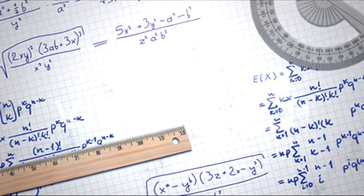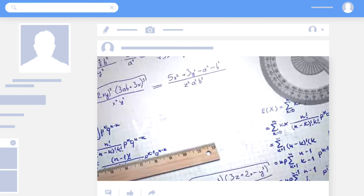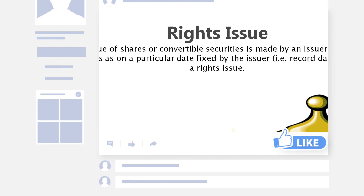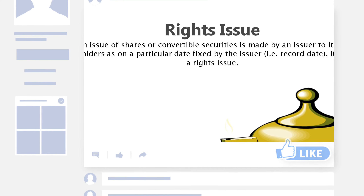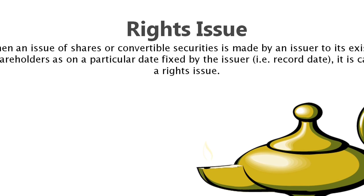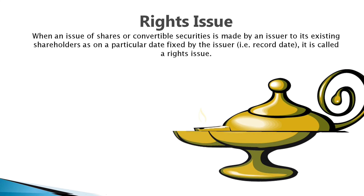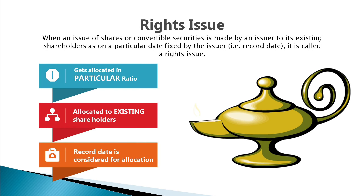Then comes the rights issue. When an issue of shares or convertible securities is made by an issuer company to its existing shareholders as on a particular date fixed by them — generally known as the record date — it is called a rights issue. The rights are offered in a particular ratio to the number of shares or convertible securities held as on the record date.